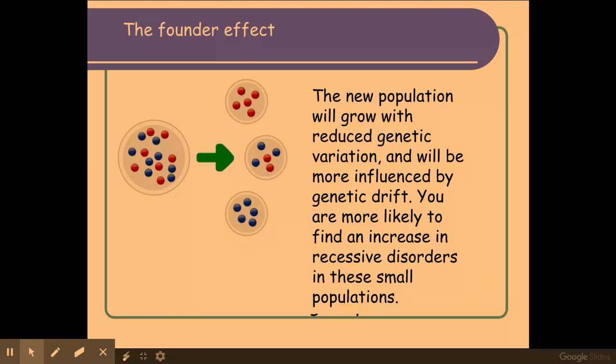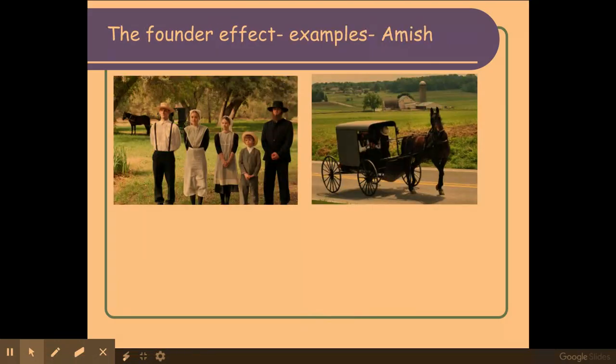Within these smaller founder populations you're more likely to find an increase in recessive disorders. An example is the Amish community, which was established by approximately 200 Germans. Within this original population there was a high frequency of a syndrome called Ellis-van Creveld syndrome, which resulted in shorter individuals with polydactyly — that is, more than five fingers. As a result of this founder effect, there was an increase in this rare recessive disorder within the Amish population.